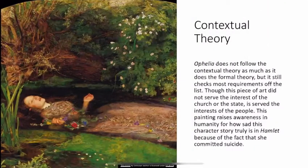Ophelia does not follow the contextual theory as much as it does the formal theory, but it still checks most of the requirements off the list. Though this piece of art did not serve the interests of the church or the state, it served the interests of the people. This painting raises awareness and humanity for how sad this character's story truly is in Hamlet because of the fact that she committed suicide.